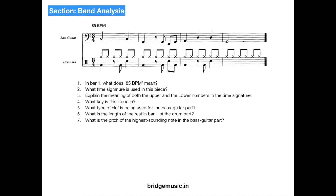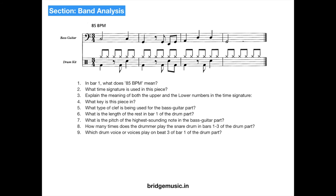What is the pitch of the highest sounding note in the bass guitar part? The highest sounding note is D. How many times does the drummer play the snare drum in bars 1 to 3 of the drum part? Counting — 1, 2, and 3 — it plays 3 times. Which drum voices play on beat 3 of bar 1? Beat 3 is the snare and the hi-hat — so hi-hat and snare are the correct answers.